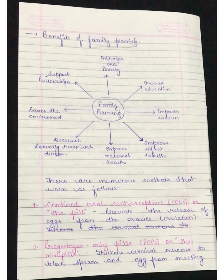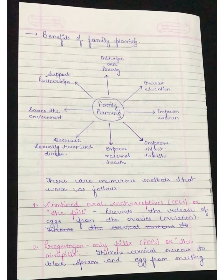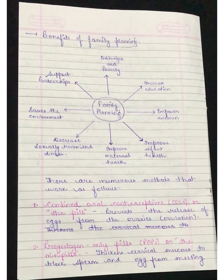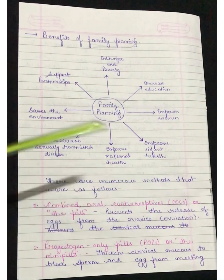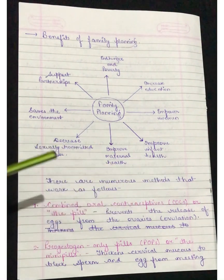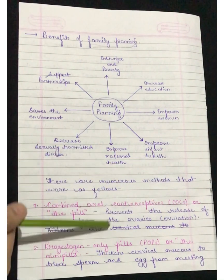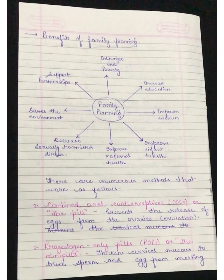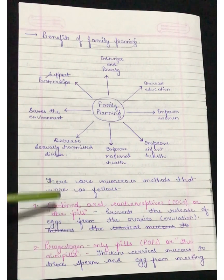For family planning we need to use contraceptives. There are different types of contraceptives we can use to prevent or manage family planning. The first is combined oral contraceptives, or the pill — it prevents the release of eggs from the ovaries, that is ovulation. Second is the progestogen-only pills, or the mini pills — they thicken the cervical mucus to block the sperm and egg from meeting.